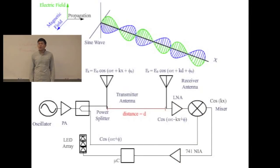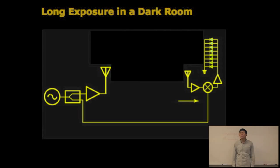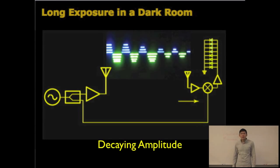We can then use this setup to create a light painting with LEDs in a dark room. This picture is a result of a 30-second exposure, during which we slowly moved the receiving antenna in one direction. You can clearly see the sinusoidal pattern of the RF electromagnetic wave. You can also see the decaying amplitude of the sine wave as it propagates.